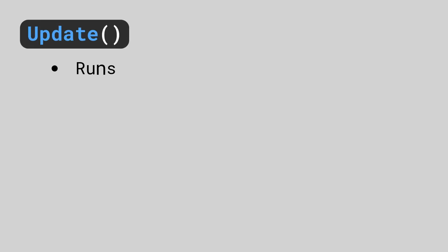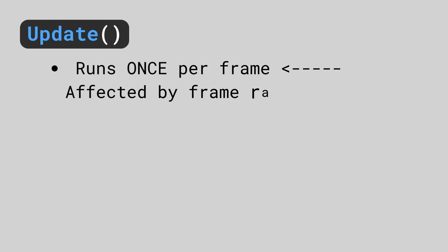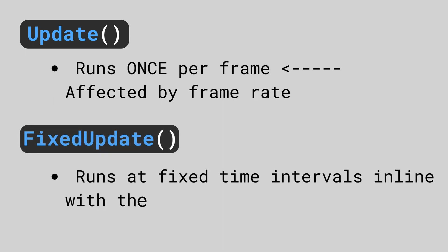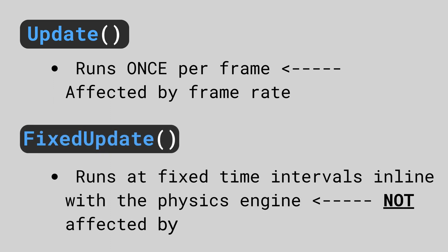First, let's define them. Update runs once per frame, which means it's affected by the frame rate. FixedUpdate is called at fixed intervals of time in line with the physics engine, which means it cannot be affected by frame rate.